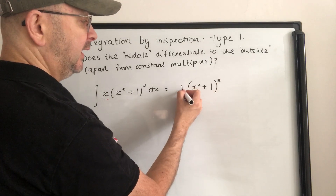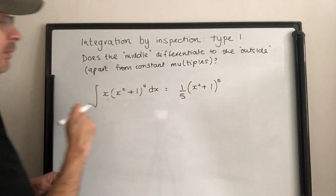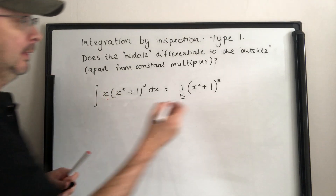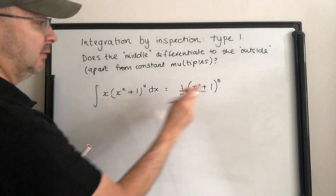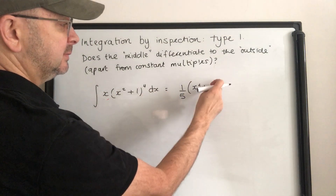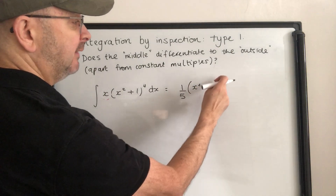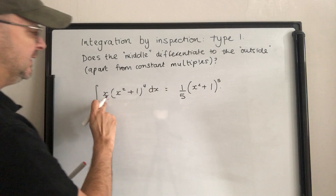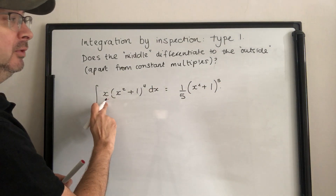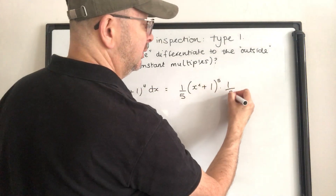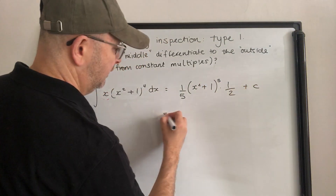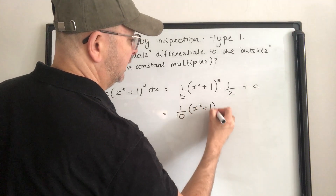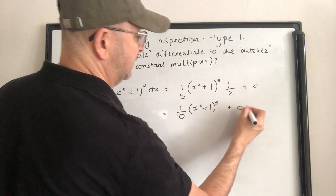We don't want the 5 there, so we multiply by a fifth. A fifth times 5 gives us x squared plus 1 to the power of 4, multiplied by 2x from the chain rule. There's the x from the chain rule so we need to get rid of the 2. So our final answer will be one tenth times x squared plus 1 to the power of 5, plus c.